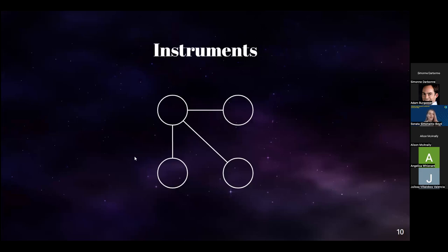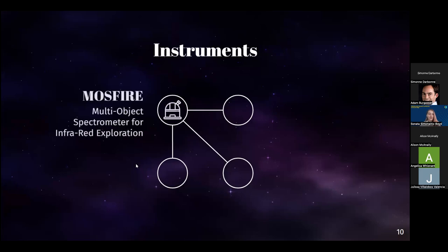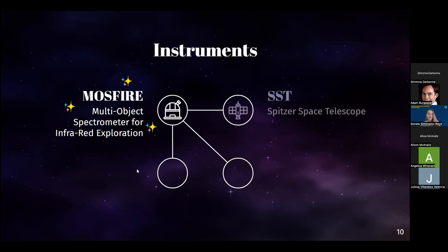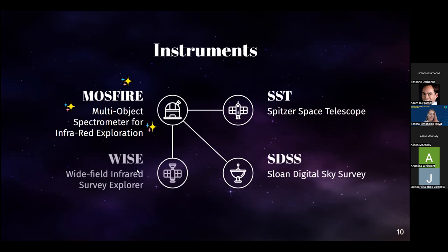The primary catalog I'm using for my project this summer is comprised of objects from four instruments. The first is MOSFIRE, which is a spectrograph on the ground-based Keck-1 telescope on Mauna Kea in Hawaii, and the main catalog for my project. The rest of my data is archival, from Spitzer, Sloan, and WISE.